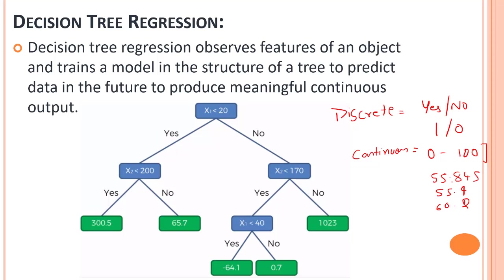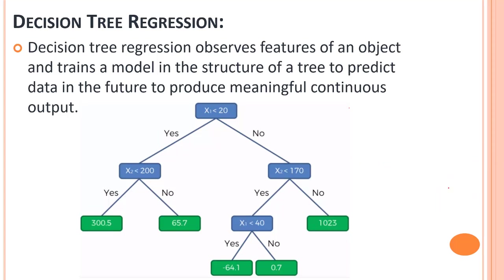Decision tree regression observes features of an object and trains the model in the structure of a tree to predict data in the future, producing meaningful continuous output. Let's recall the structure: we have the root node at the top, then decision nodes, and then leaf nodes. Another way to read it is parent node and child node — so x1 is the child node of parent x2.